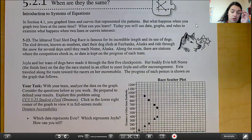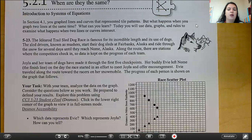Joyla and her team of dogs have made it through the first five checkpoints. Her buddy, Evie, left Nome, the finish line, on the day the race started in an effort to meet Joyla and offer encouragement. Evie traveled along the route toward the racers on her snowmobile. The progress of each person is shown on the graph that follows.